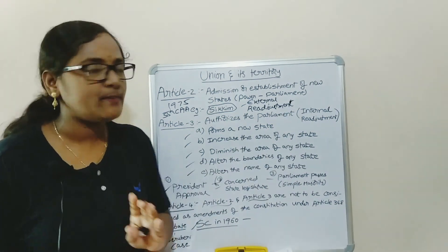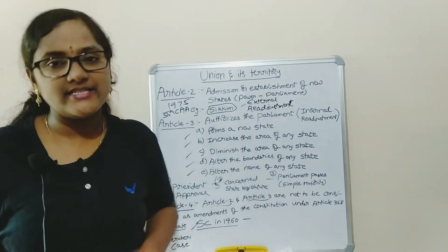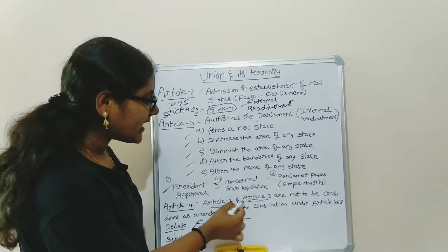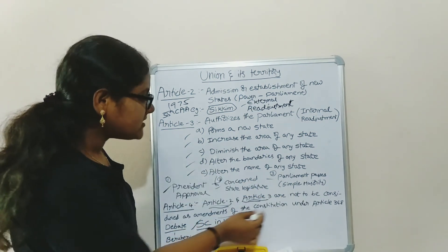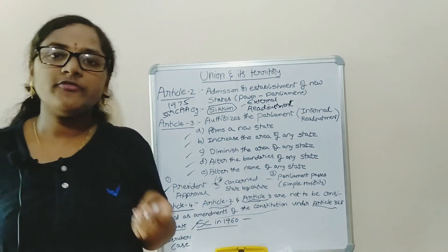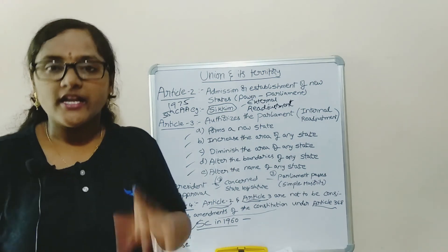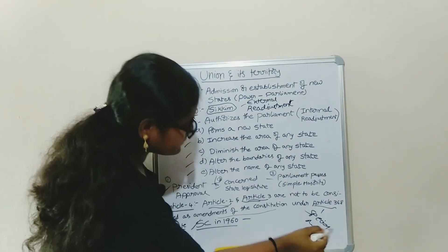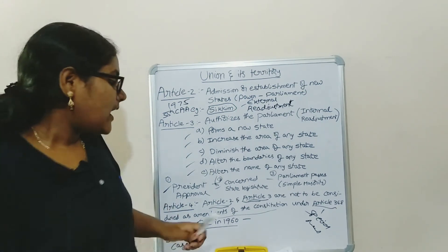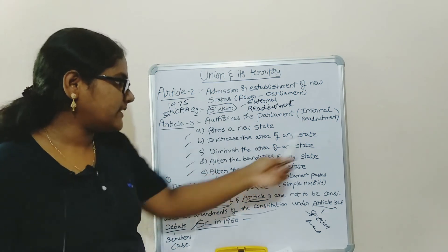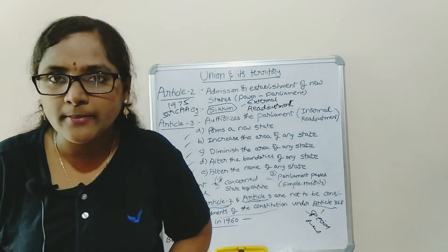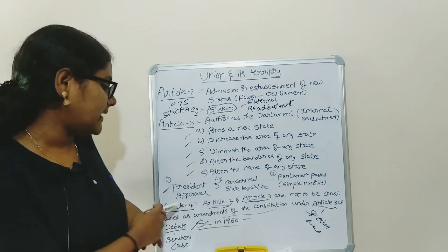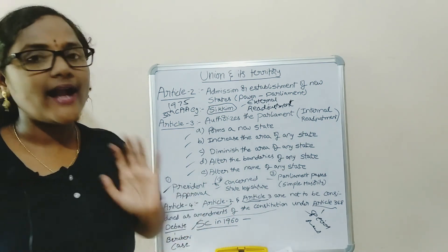So Article 3 is all about internal readjustment and Article 2 is all about external readjustment. Article 4 says that Articles 2 and 3 are not to be considered as constitutional amendments under Article 368. Any constitutional amendment under Article 368 must be passed through a special majority. But Article 4 clarifies that the external readjustment under Article 2 and the internal readjustment under Article 3 should not be considered constitutional amendments under Article 368 — these require only a simple majority and can be amended by ordinary legislative process.